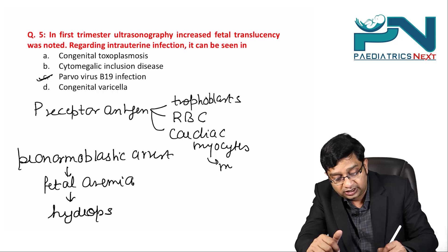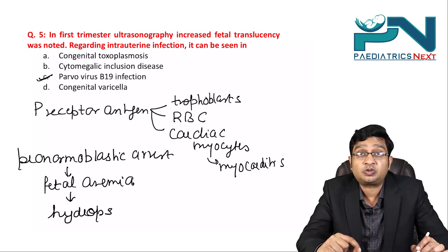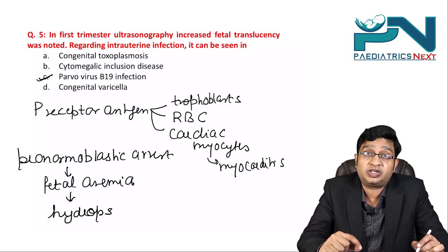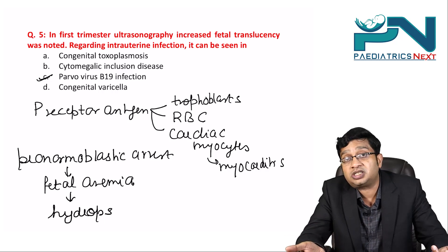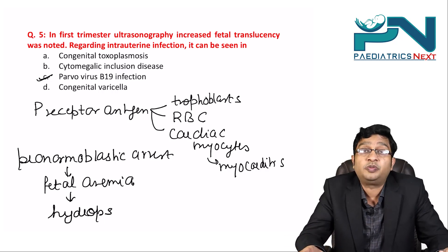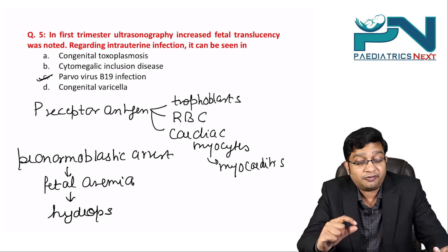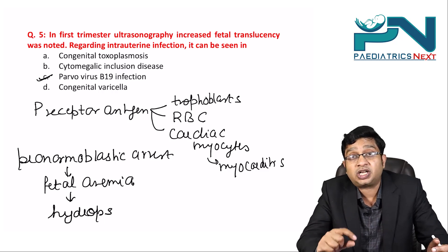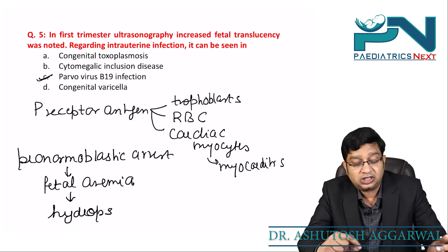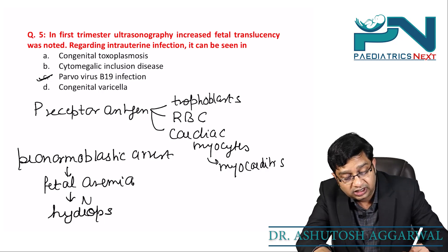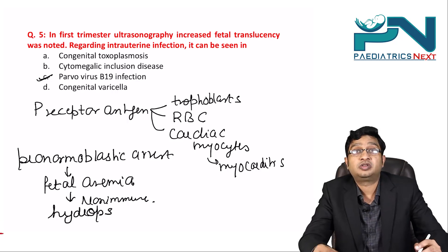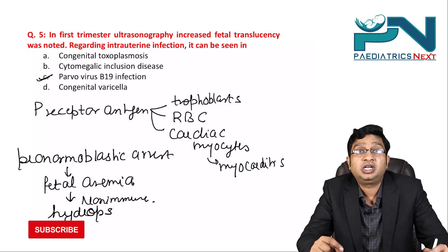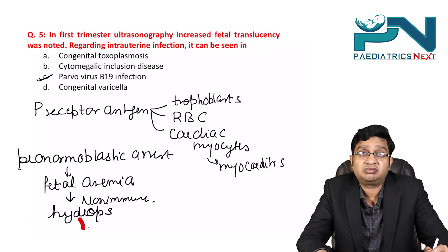Fetal anemia from parvovirus B19 causes non-immune hydrops fetalis, which results in the increased nuchal translucency thickness seen on ultrasound. Parvovirus B19 can also cause myocarditis. While increased nuchal translucency is commonly associated with Down syndrome and Turner syndrome, this question specifically tests which intrauterine infection causes it — the answer being parvovirus B19 through non-immune hydrops. This concludes the discussion of MCQs on intrauterine infections.